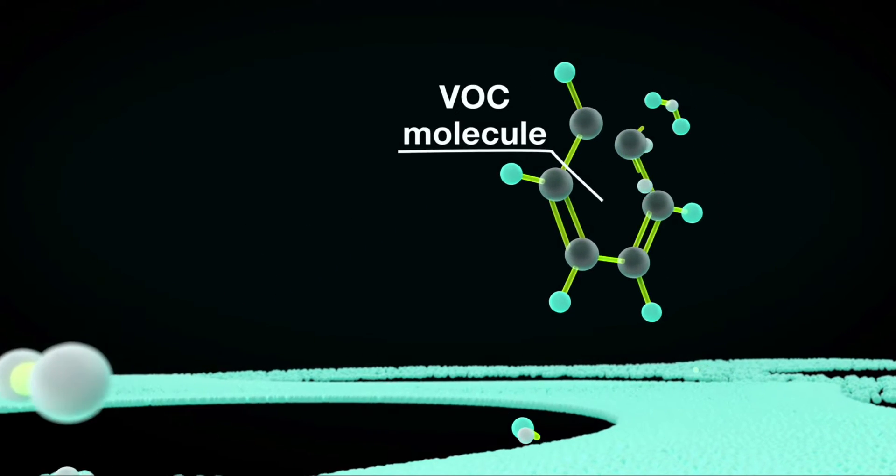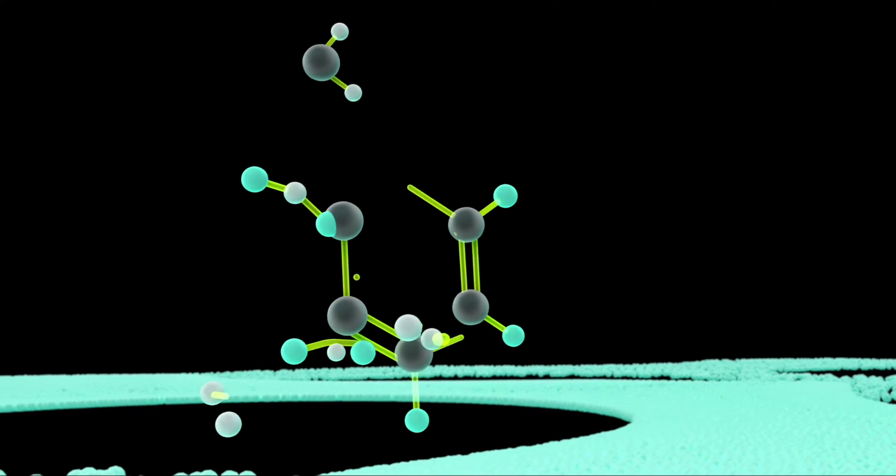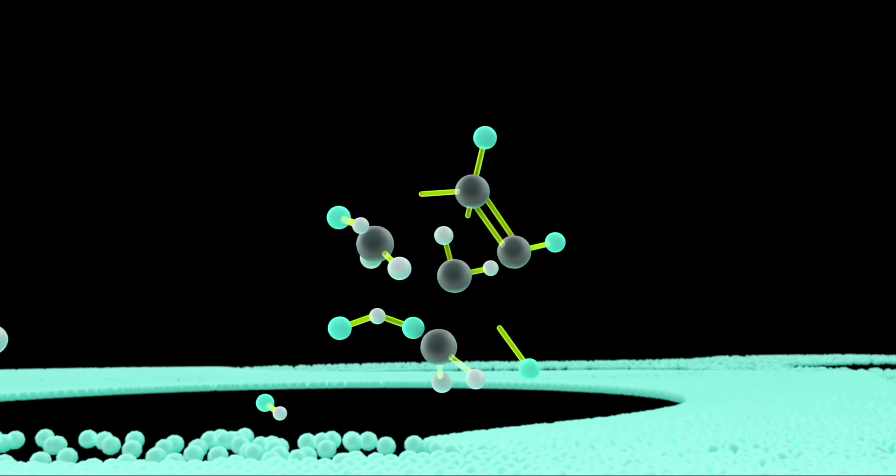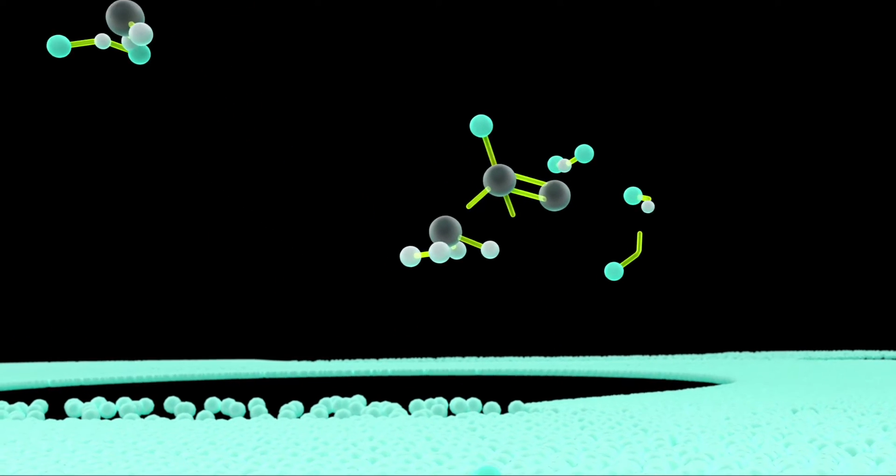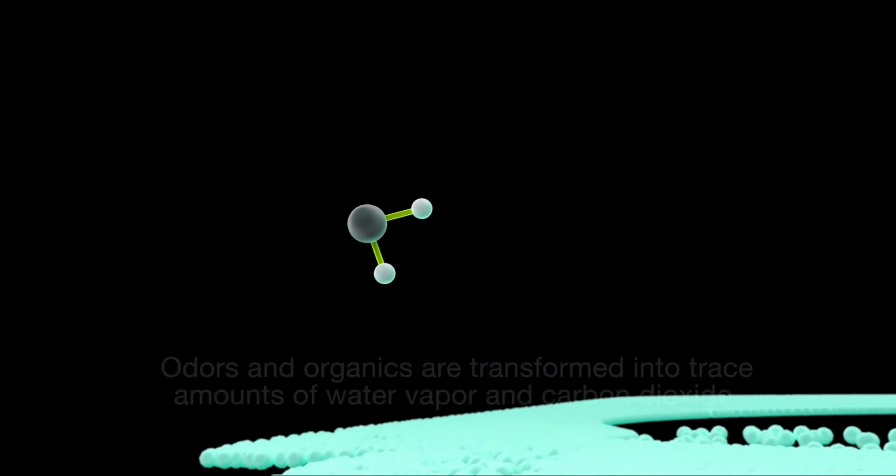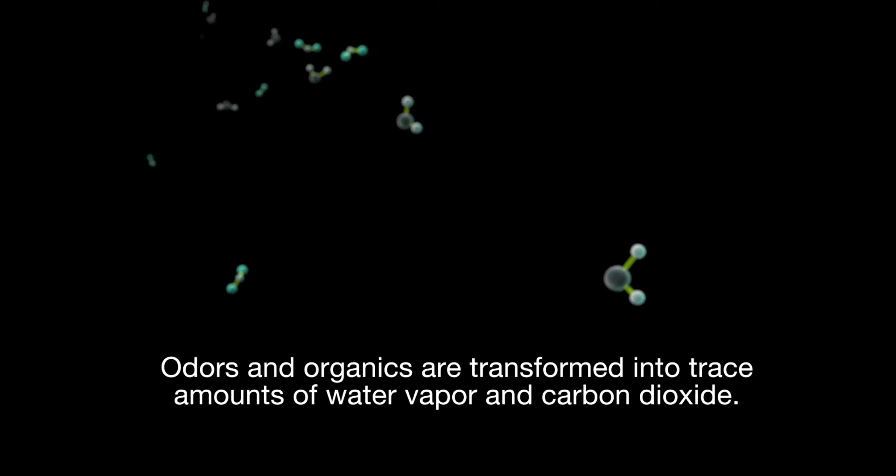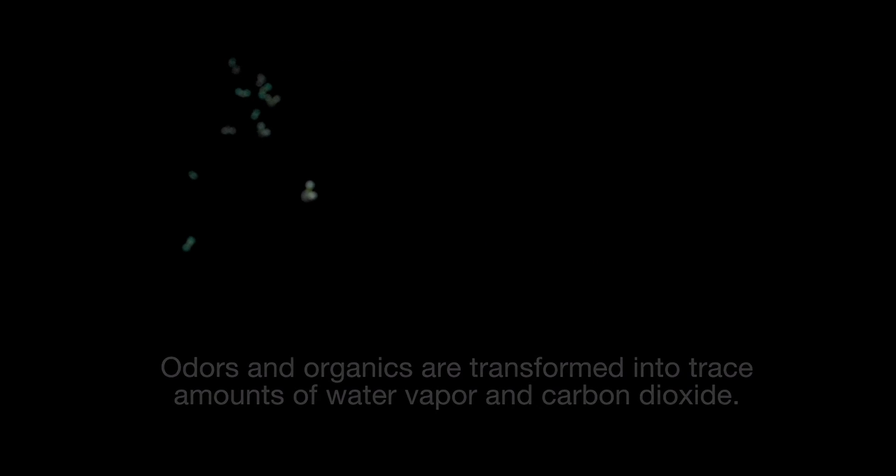As odors, germs, mold, and other VOC organic molecules approach the PCO field, they are disassembled as the oxidizers pull electrons from them. The purification process is completed with the remaining molecules recombining to form simple water vapor and trace amounts of carbon dioxide.